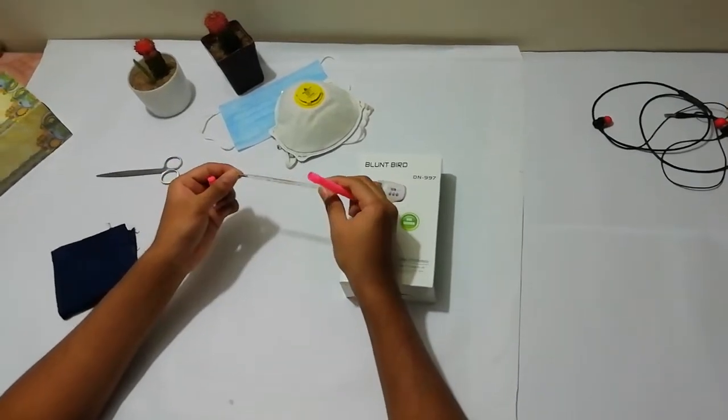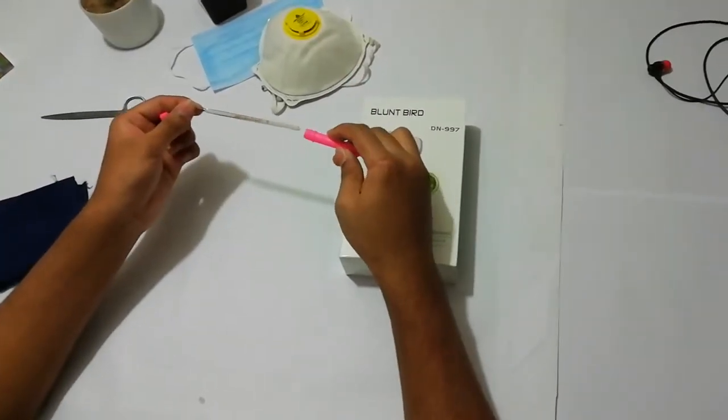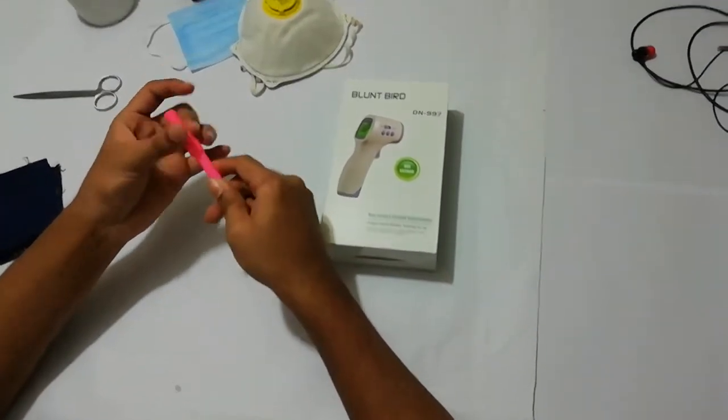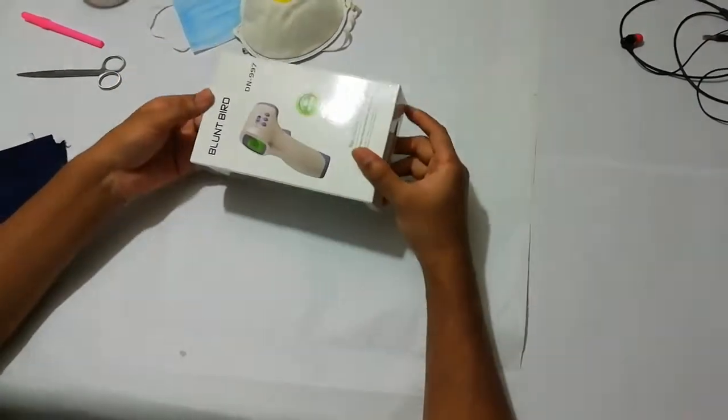And it comes with Fahrenheit scale. You see here. And it's an ordinary thermometer. Let's keep it inside and see what is in this box.